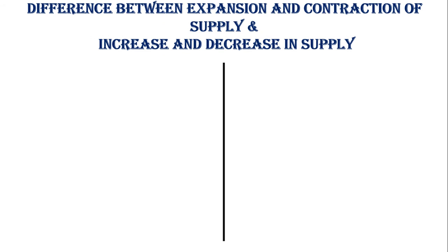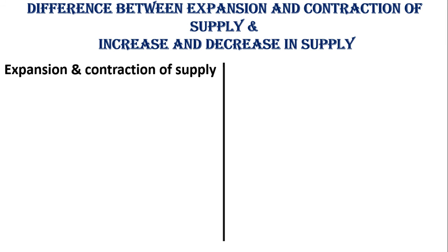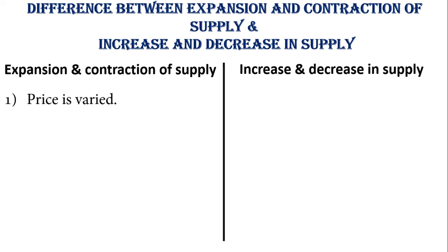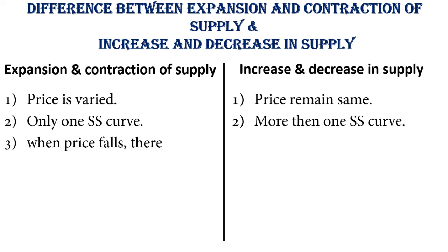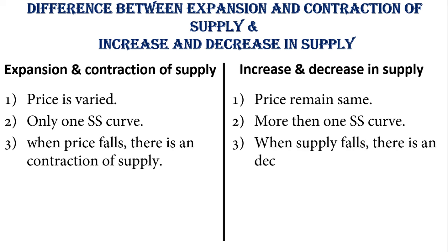Let us see the difference between expansion and contraction of supply, and increase and decrease in supply. In expansion and contraction of supply, price varies or price changes — as seen in our previous videos. Whereas in increase and decrease in supply, price remains the same at 20 and other factors change. Also, in expansion and contraction only one supply curve is given, whereas here more than one supply curve — SS, S1S1, S2S2 — are present.